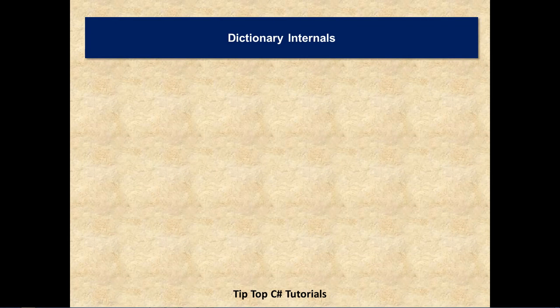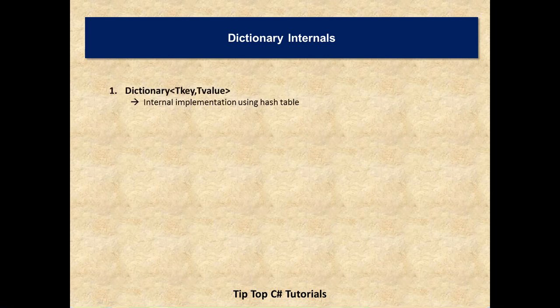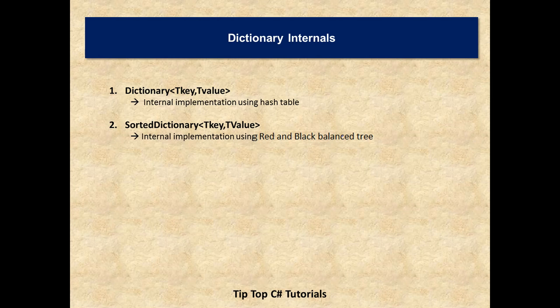To begin with, dotnet has two different implementations of dictionary which we will be using in day to day programming. One is normal dictionary where internal implementation is done using hash table and another one is sorted dictionary where internal implementation is done using red and black balance tree.